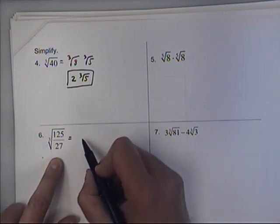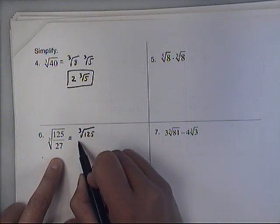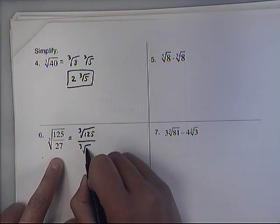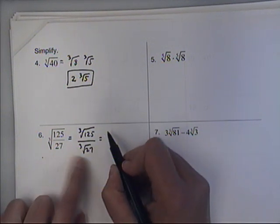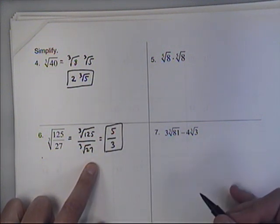This one, again, when we have a cube root of a fraction, we can take the cube root of the top part separately from the cube root of the bottom part. The cube root of 125 is 5, cube root of 27 is 3. Bingo bango, we're done.